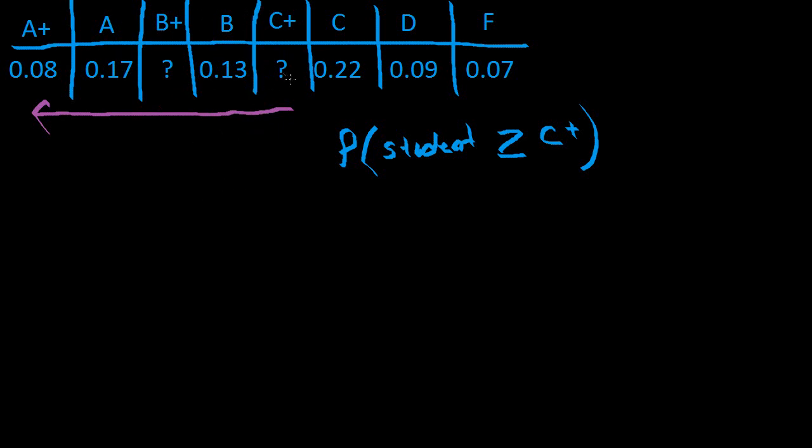...we just have to add up the probabilities of getting each of those. And you'll get an overall probability of a student getting something that's greater than C or equal to it.